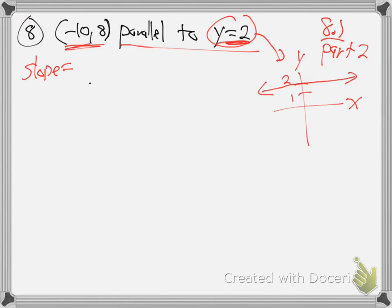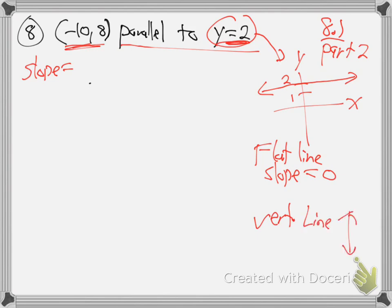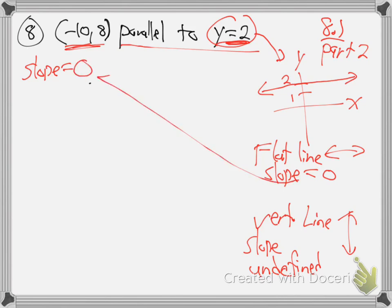What's the slope of that line? Well, any flat line like that has slope equals 0. By the way, if you have a vertical line that goes up and down, that kind of slope is undefined. So flat line is sideways, vertical line is up and down — vertical slope is undefined. Our slope here is 0 because y equals 2 is a flat line.